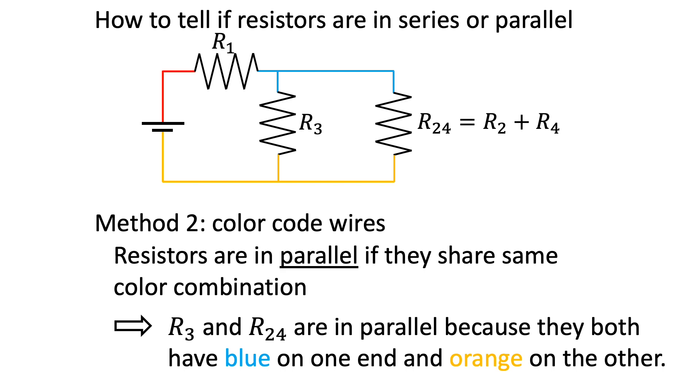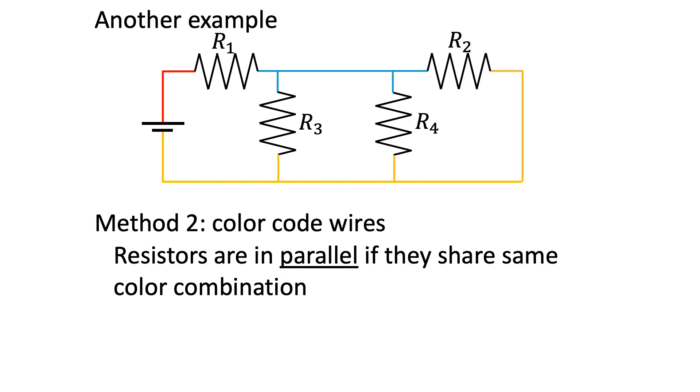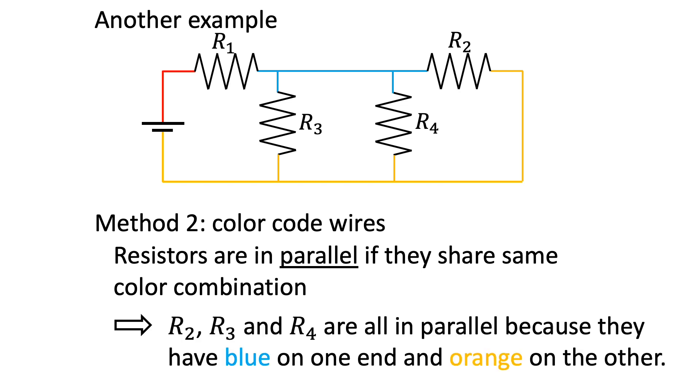Let's look at another example. To save time, I have already color coded the wires. In this case, R2, R3, and R4 all have blue on one end and orange on the other, so the three resistors are in parallel.